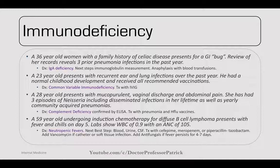For immunodeficiency cases, we've got a 36-year-old woman with a family history of celiac disease who presents for a GI bug. She has a history of three prior pneumonia infections in the past year. This would be an IgA deficiency — a mucosal deficiency — especially pneumonias, URIs, and gastrointestinal infections. The next step would be an immunoglobulin measurement, total IgA, etc.